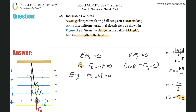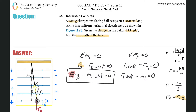In the y-equation, I can expand the force of gravity as mg: F_s times cosine of 8 degrees minus mg equals zero. We need to solve for E. Solving the x-equation for E gives: E equals F_s times sine of 8 degrees divided by q.